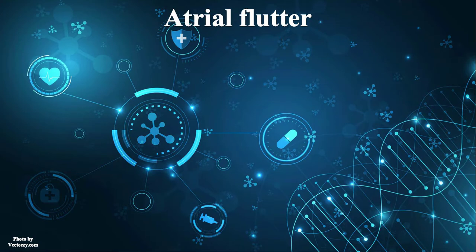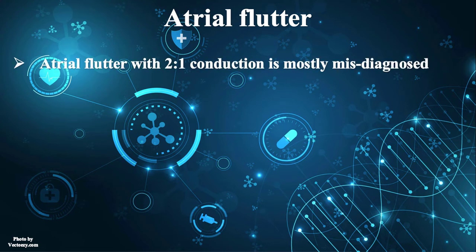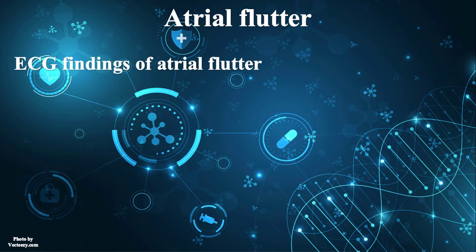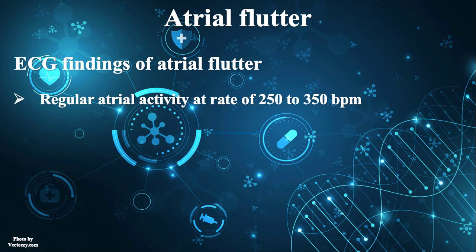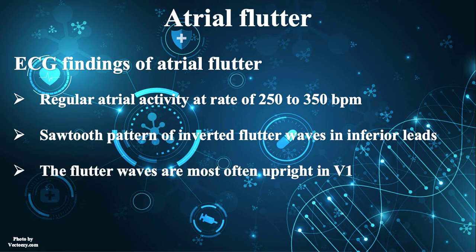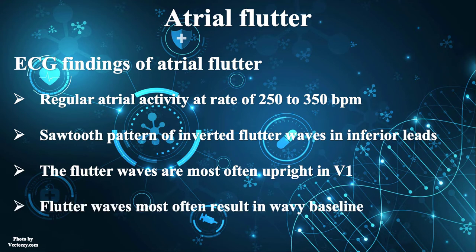Let's have a brief and to-the-point review of atrial flutter. One of the most misdiagnosed dysrhythmias in all settings is atrial flutter with 2-to-1 conduction. Atrial flutter is a kind of supraventricular tachycardia most often caused by a counterclockwise macro re-entry around the tricuspid valve and the right atrium. The ECG findings include regular atrial activity at a rate of 250–350 beats per minute, which is the hallmark of atrial flutter, producing a sawtooth pattern of inverted flutter waves in inferior leads. The flutter waves are most often upright in V1 and may be misdiagnosed as sinus tachycardia. Lastly, flutter waves most often result in a wavy baseline.